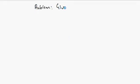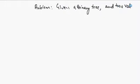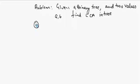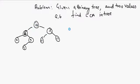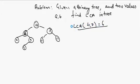Problem statement is like this: given a binary tree and two integers, two values let's say A and B, find the least common ancestor. So if this is the tree, the least common ancestor of 4 and 7 will be 6. For the definition of least common ancestor, please watch the last video where we solve the problem of finding LCA in a binary search tree.